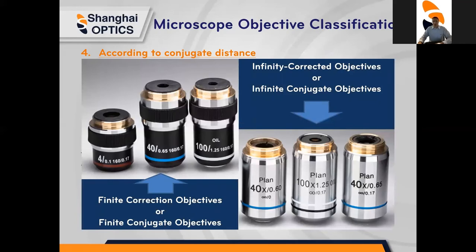According to the conjugate distance, an objective lens may be classified according to conjugate distance. For example, finite correction objectives or finite conjugate objectives will have a limit or specific number, while infinity corrected objectives or infinite conjugate objectives have no limit.